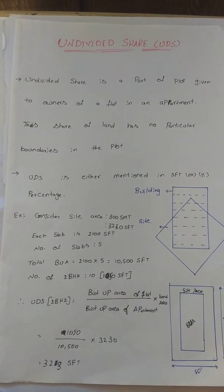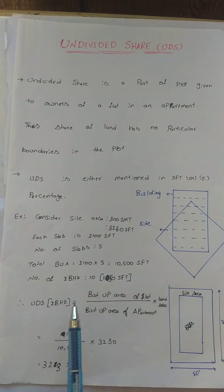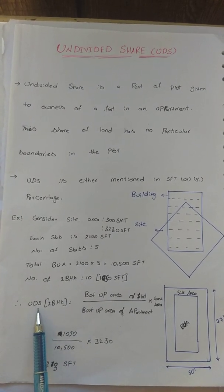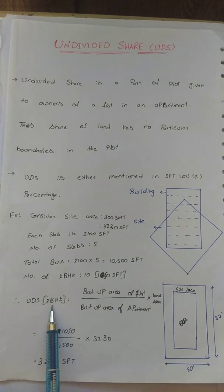Undivided share is calculated. You can easily calculate this. Undivided share for 3BHK or 4BHK - this is what you need to do.